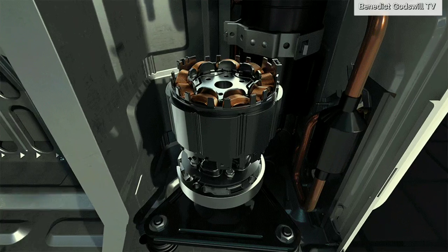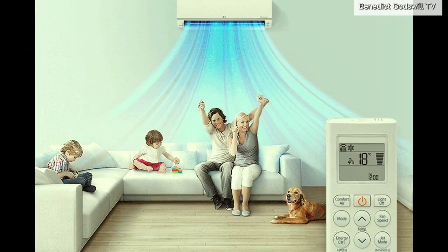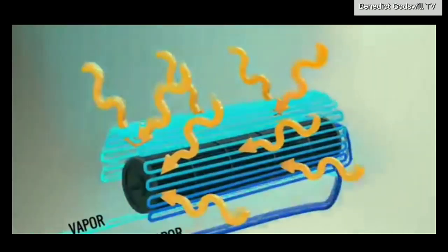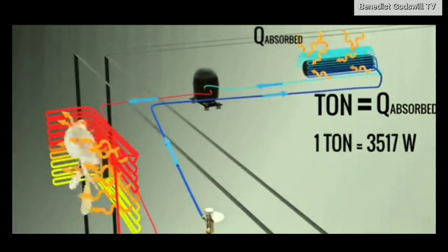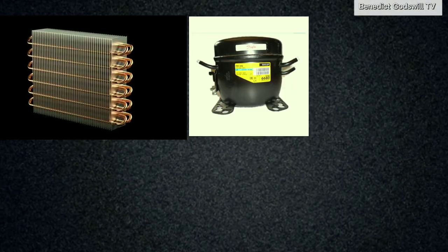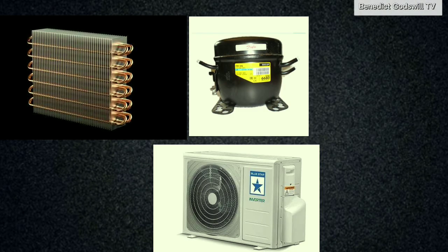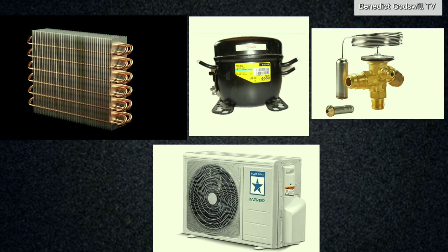Well, it's not making cold — it's moving heat, and that's where the science begins. An air conditioner is essentially a heat pump, a system designed to transfer thermal energy from inside your room to the outside air. It works using a closed-loop system of coils, a refrigerant fluid, and four key components: the evaporator, the compressor, the condenser, and the expansion valve.